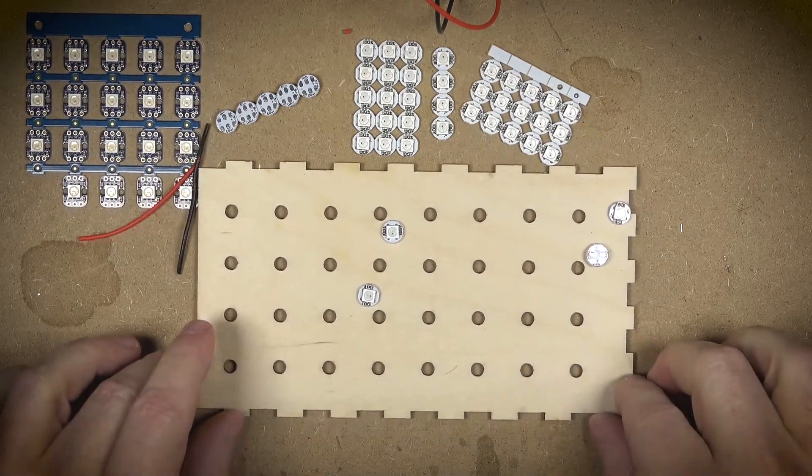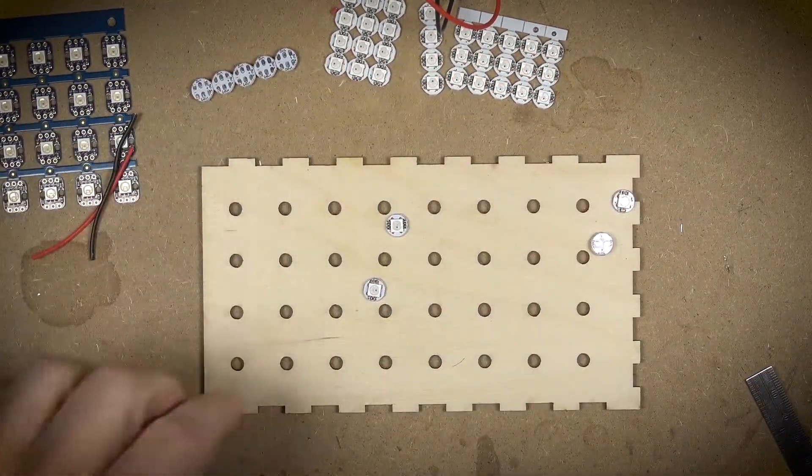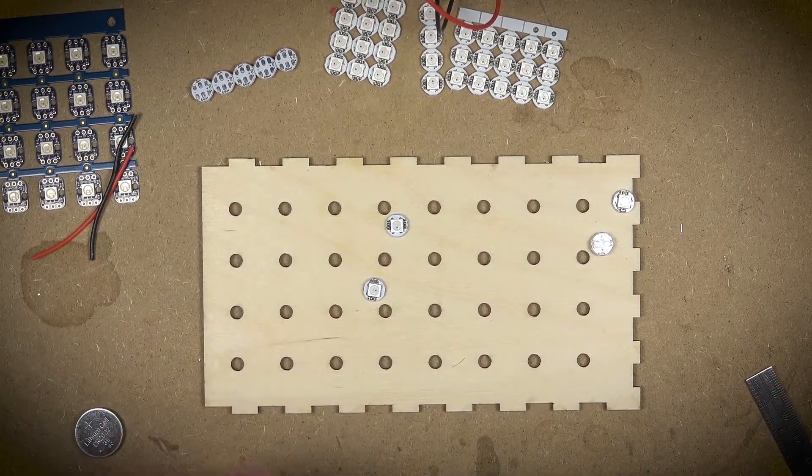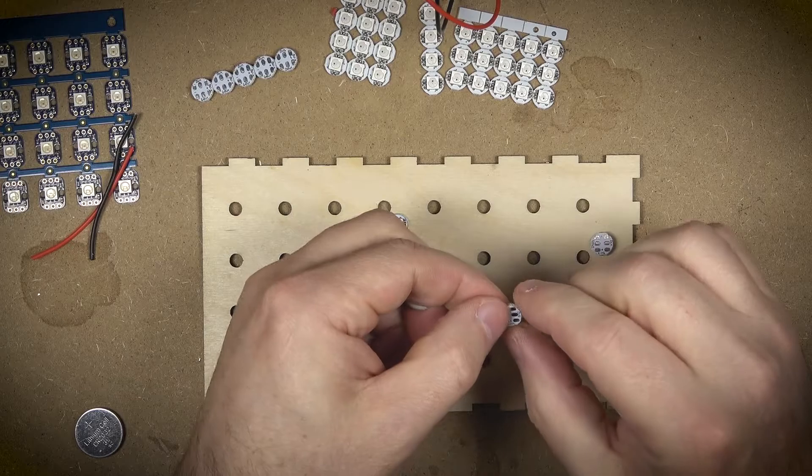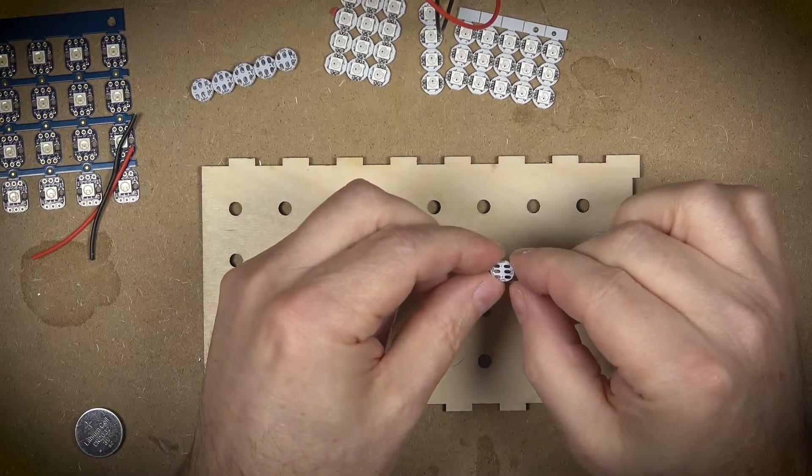Once I have the right number of LEDs broken out, I'm going to either use a template or the model itself, like this roof panel for my book nook, to start thinking about where I'm going to place the NeoPixels.